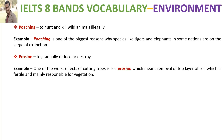'Erosion' means to gradually reduce or destroy. The example explains that one of the harmful effects of cutting trees is soil erosion, which removes the top layer of soil that is fertile and mainly responsible for vegetation.